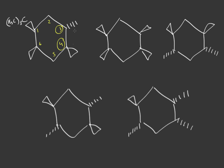If you switch between an odd number and even number, and both want to be equatorial, one has to be up and one has to be down. So basically: odd numbers — if they're cis, they're all equatorial or all axial; even numbers — if they're cis, they're all equatorial or all axial.